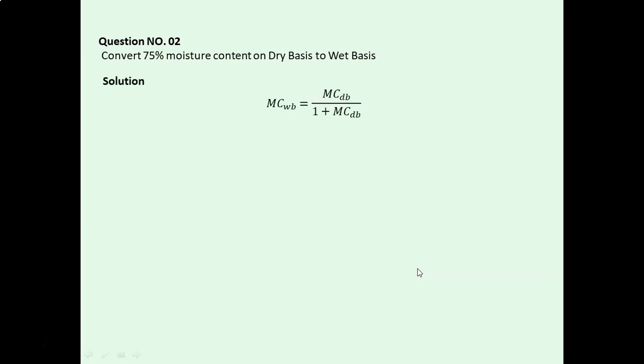Here also we will use the same formula that we did in the previous question. That is MCWB equals MCDB divided by 1 plus MCDB. Here also we will convert this 75% to decimal form and then put the value in the formula.